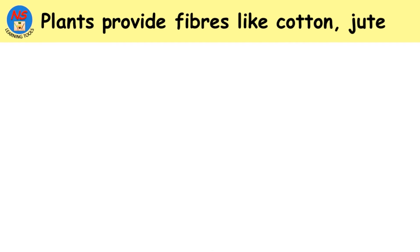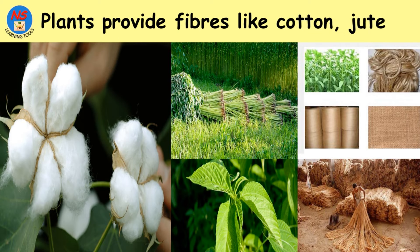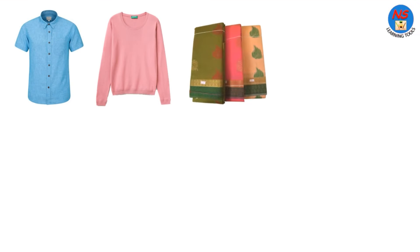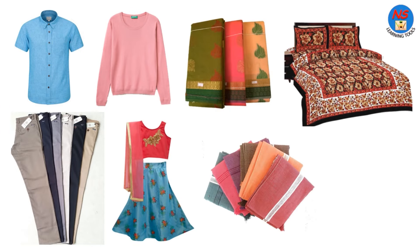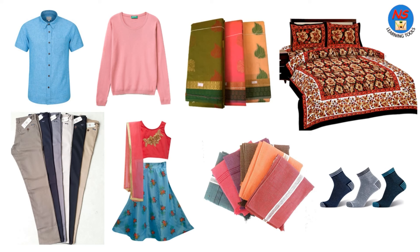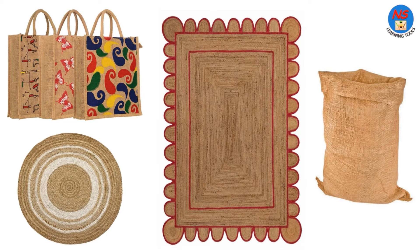Plants provide fibers like cotton and jute. Cotton is used to make clothes, towels, bedsheets, etc. Jute is used to make many objects like carry bags, sacks, and carpets. Most of the carry bags and sacks that we see are made of jute, due to its strength.